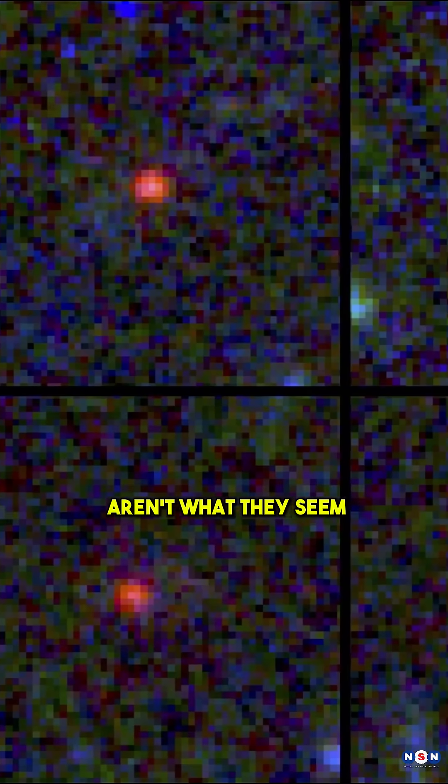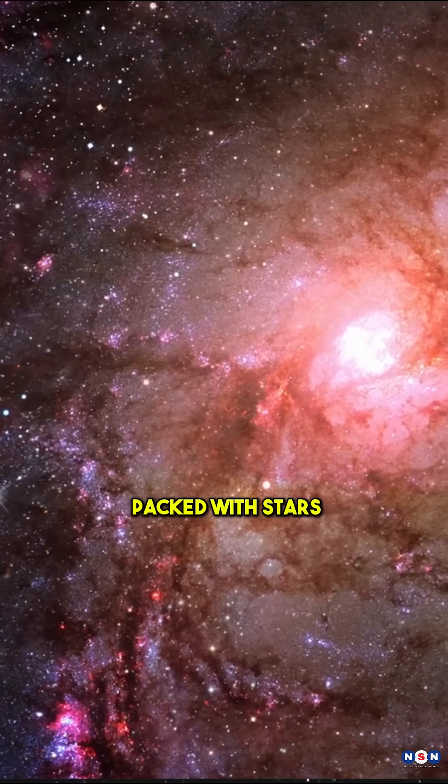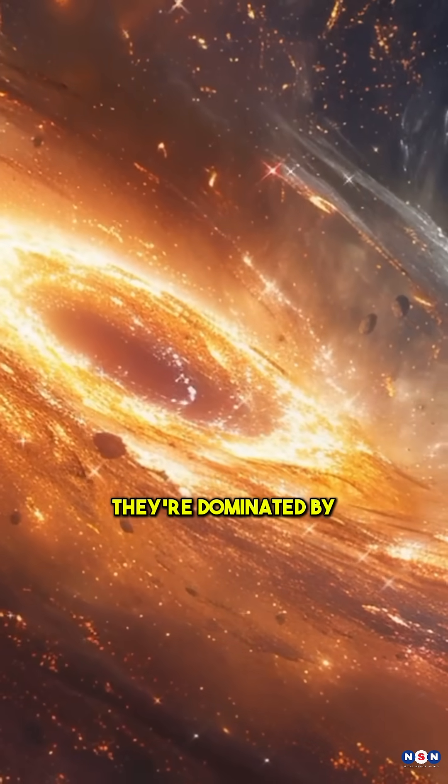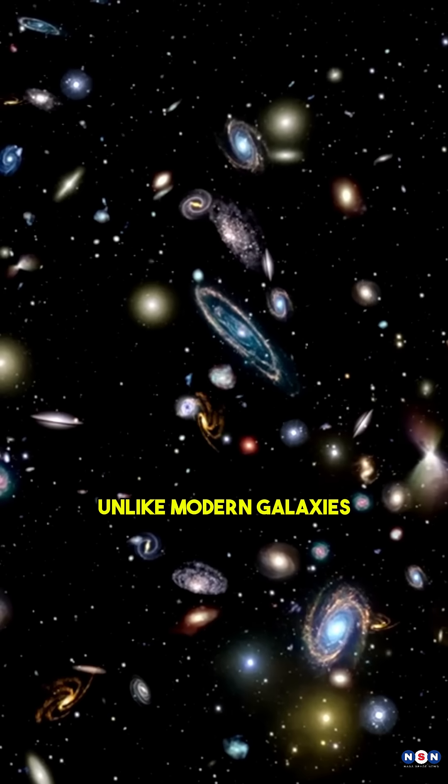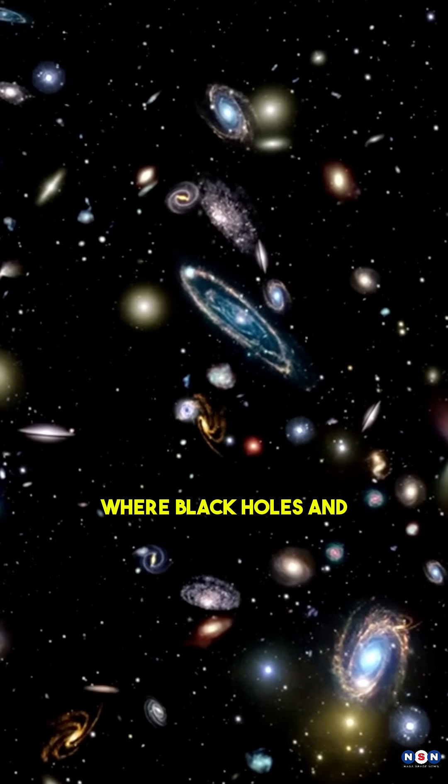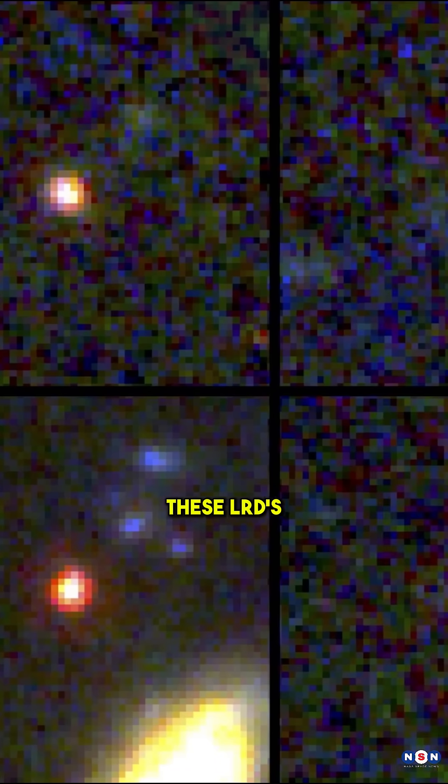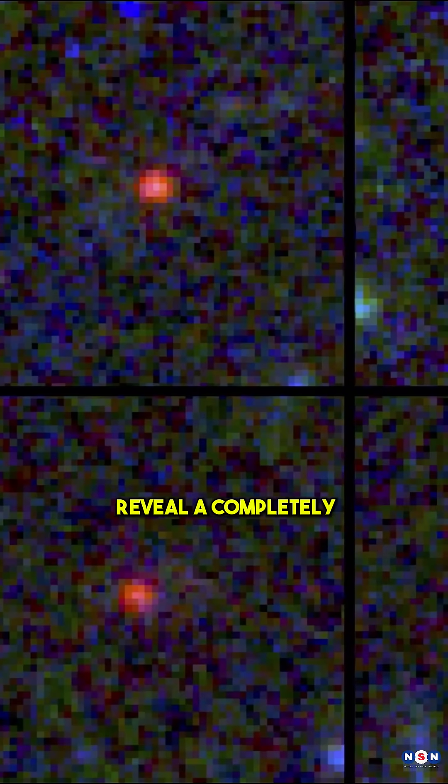These tiny red-hued objects aren't what they seem. They aren't just packed with stars. Instead, they're dominated by supermassive black holes growing at astonishing speeds. Unlike modern galaxies where black holes and stars evolve together, these LRDs reveal a completely different story.